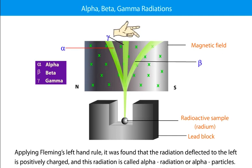Applying Fleming's left hand rule, it was found that the radiation deflected to the left is positively charged and this radiation is called Alpha radiation or Alpha particles.